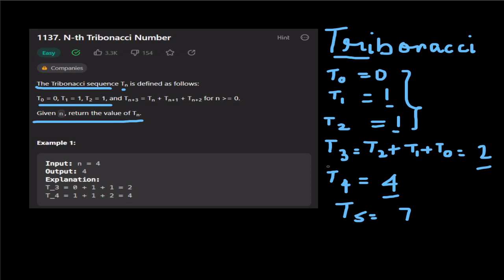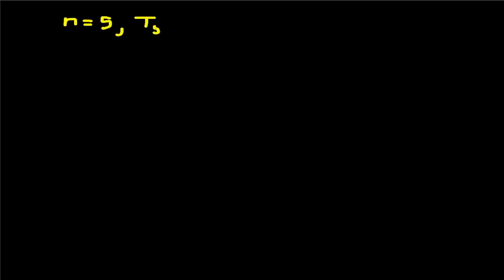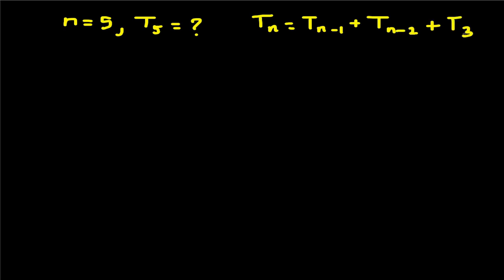Now, first of all, how do we solve using recursion? How do we solve using dynamic programming? If you look at the example where n is equal to 4, then we will calculate tf4. If n is equal to 5, then the question is tf5 — that is the fifth Tribonacci number. This is the recursive relation.